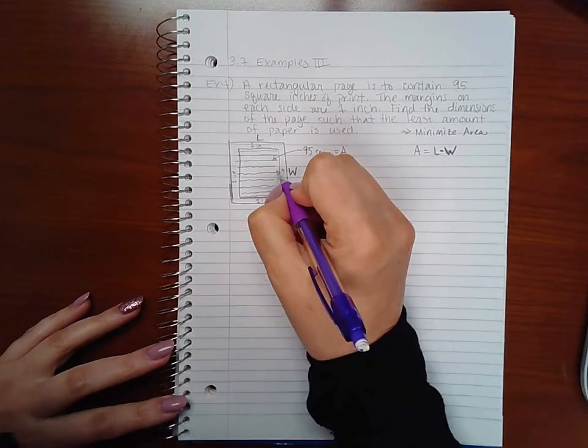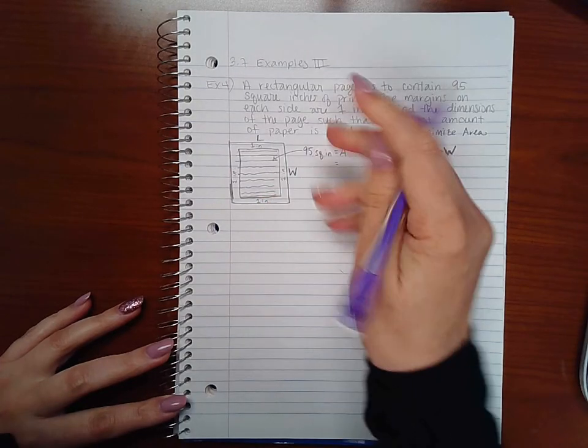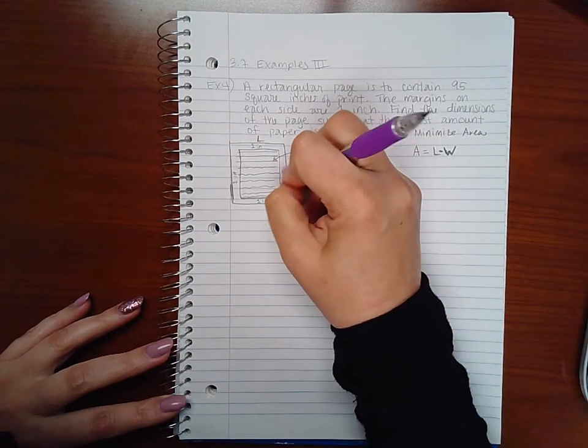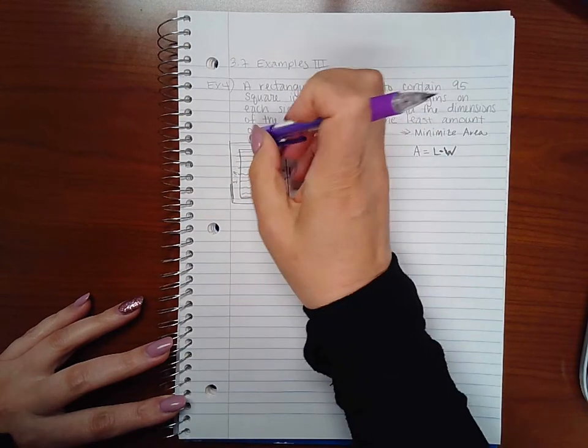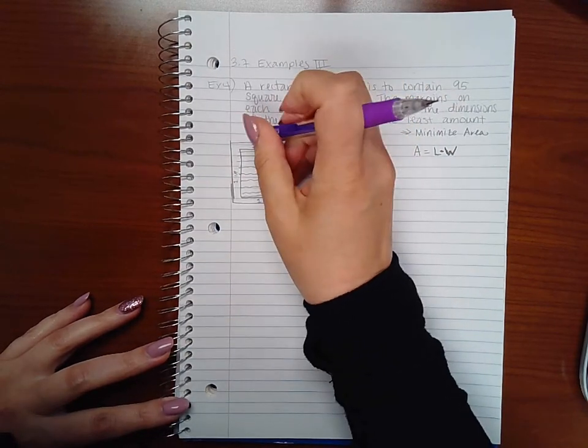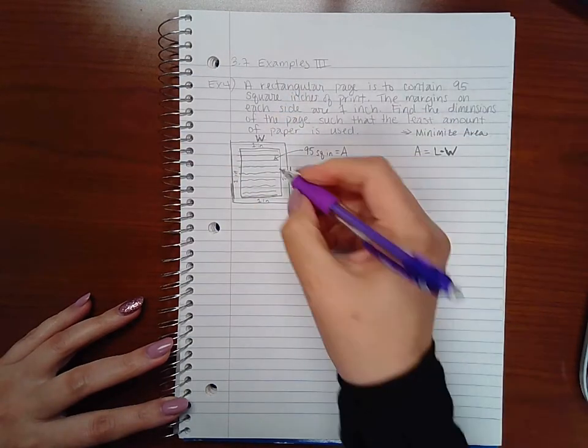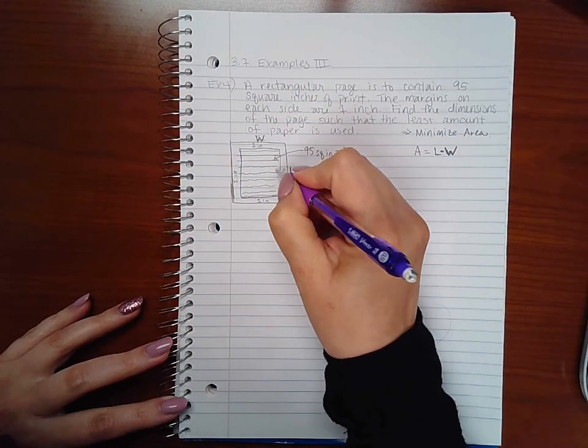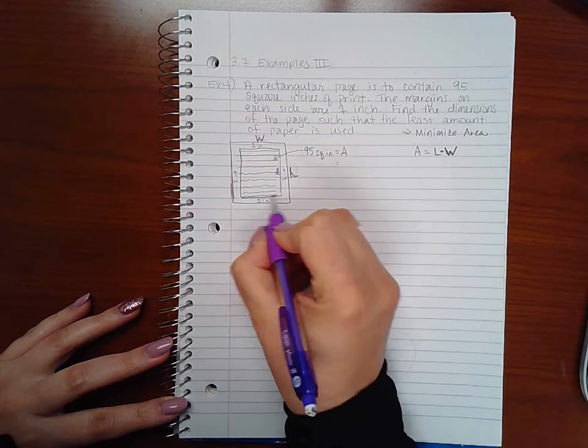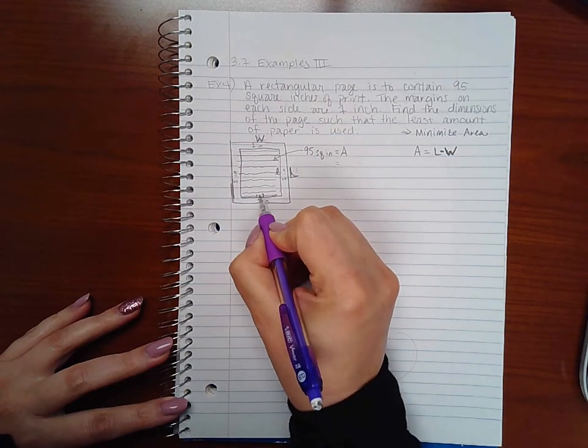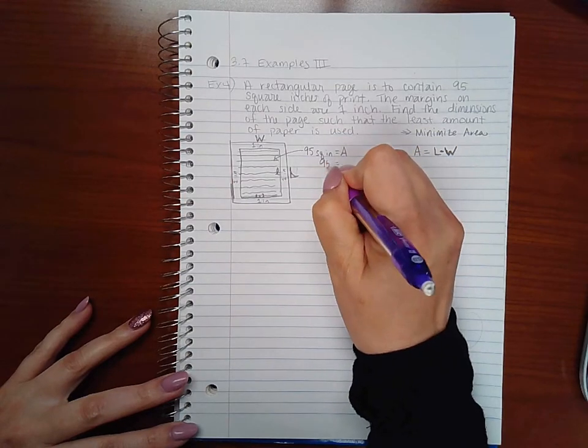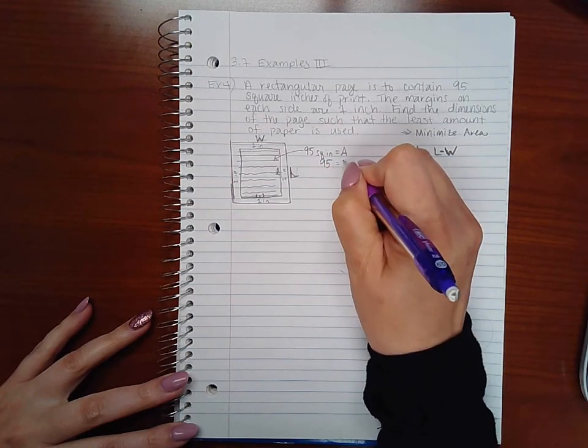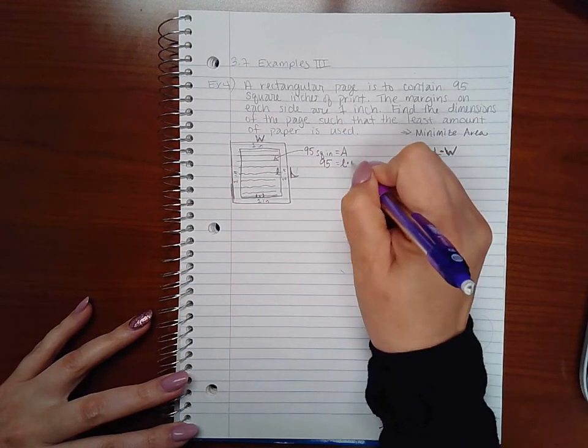Actually these are probably backwards because the page is probably longer lengthwise than it is wide. This length here is going to be little l and this width here is going to be little w. When it comes to this 95, that's found by doing little l times little w.